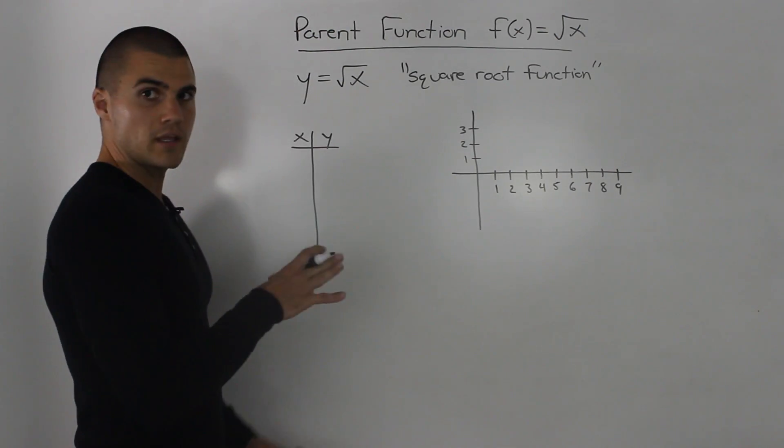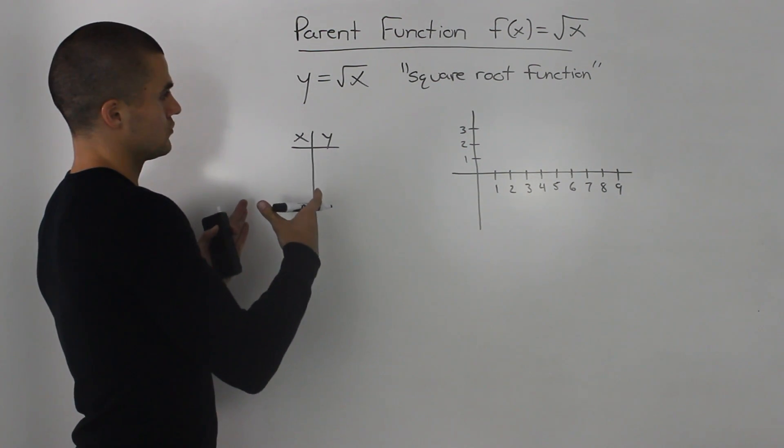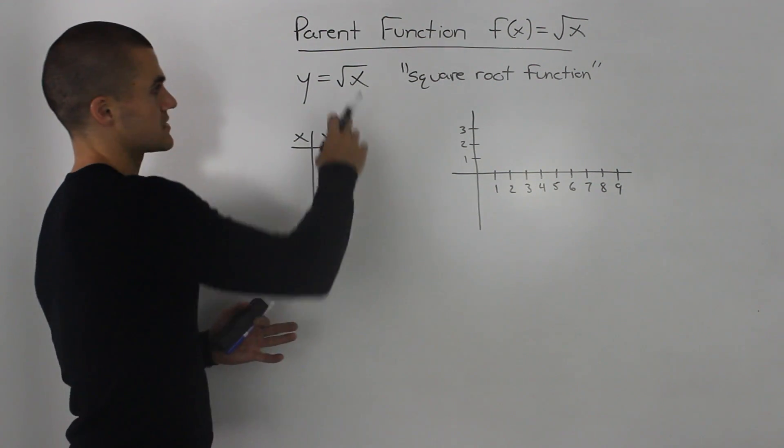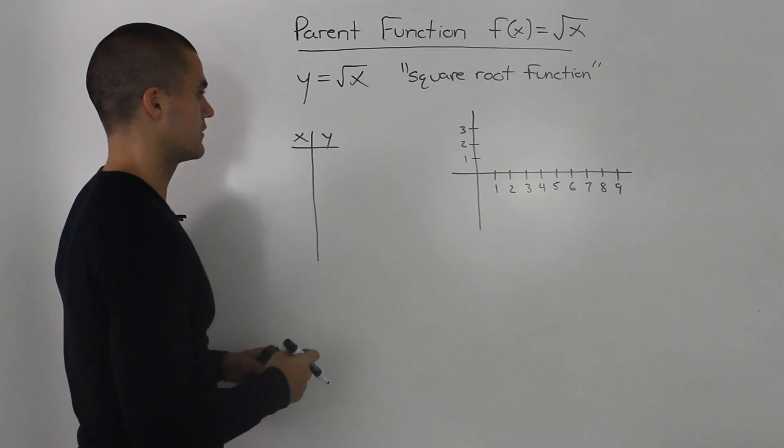Now before making a table of values and plotting this function, I want you to notice how the x values can't be negative because if we put a negative value for x then we'll be rooting a negative number and that's undefined.